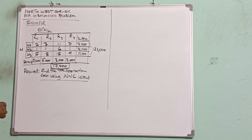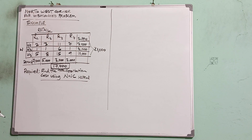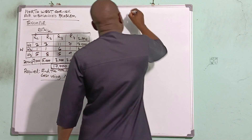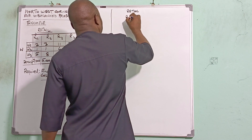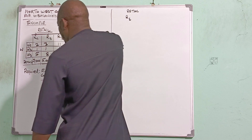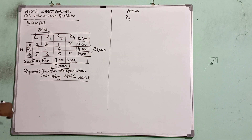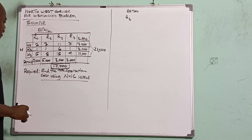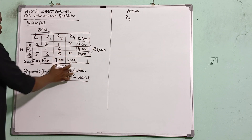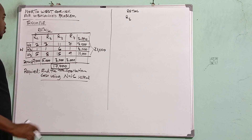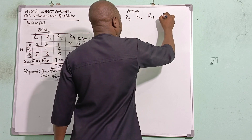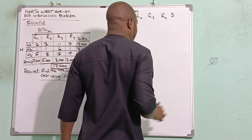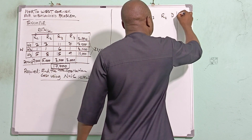We now need to come up with a balanced problem so we can apply Northwest Corner. I'll make a provision for the shortfall — we need 4,000 extra to reach 21,000 (since supply is 21,000 and demand is 17,000). So I'm adding: Retail 1, Retail 2, Retail 3, Retail 4, and a Dummy column, plus the Supply column.